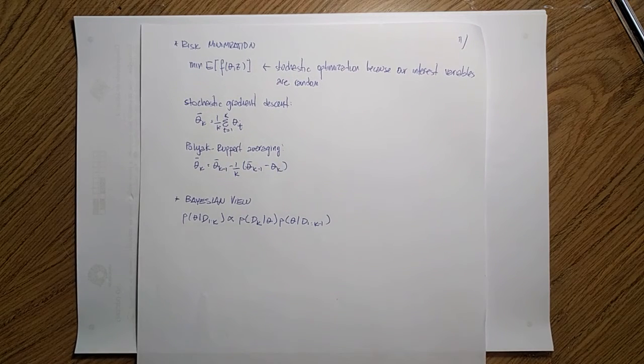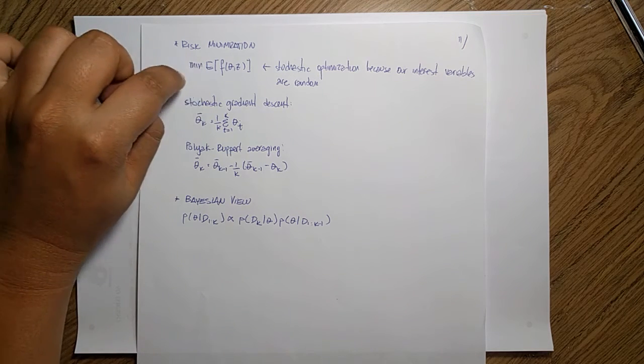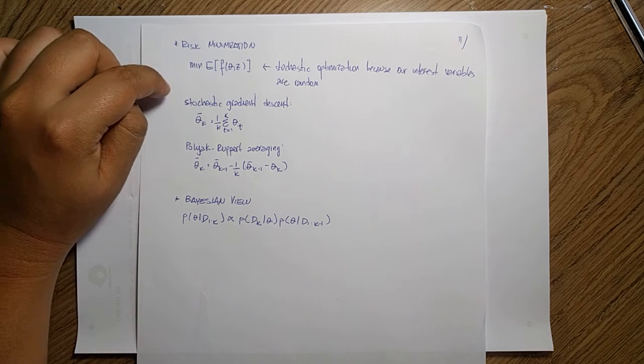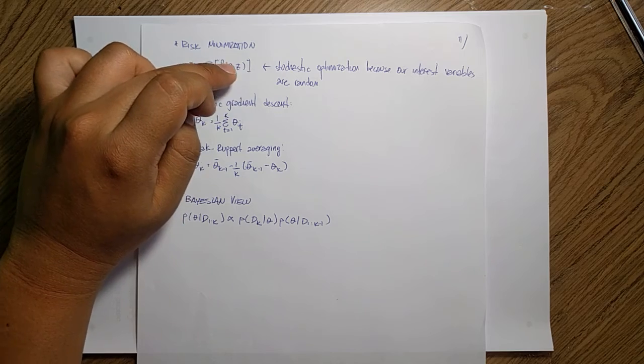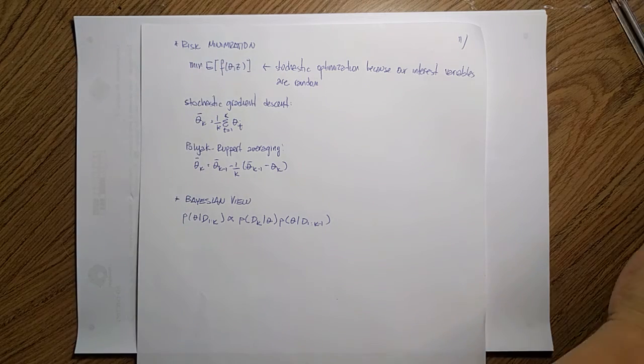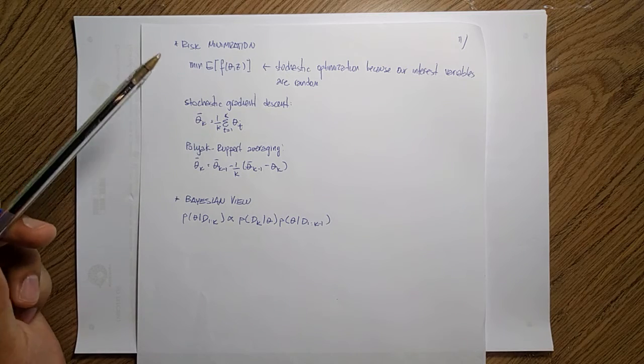And another application that I want to discuss and that also appears in the book is the risk minimization. Basically the idea is that I just want to minimize the expected value of some function f, right? I want to do some stochastic optimization because my interest variables are just random variables too.